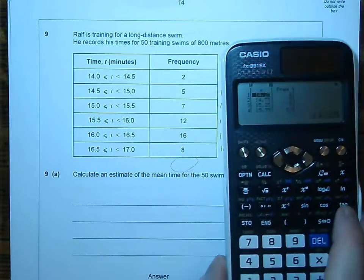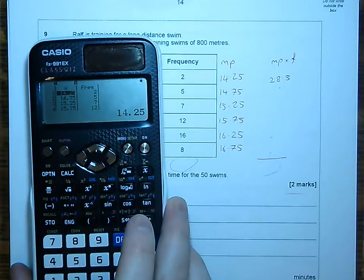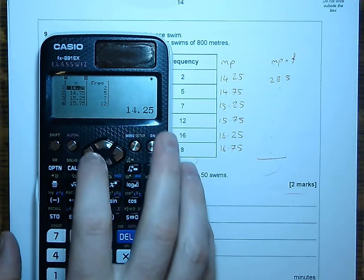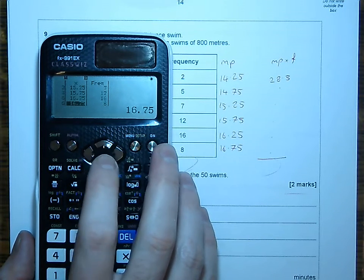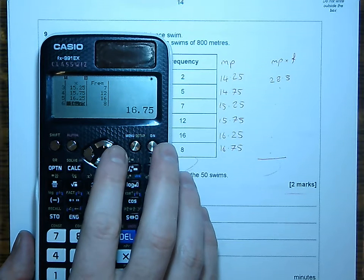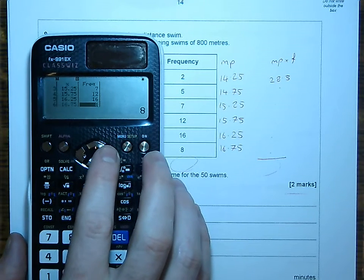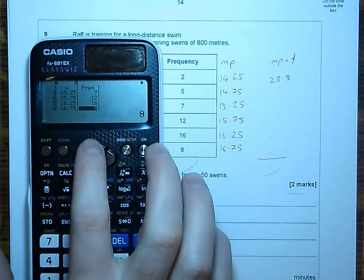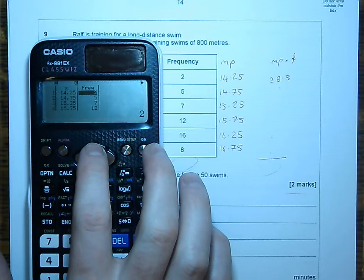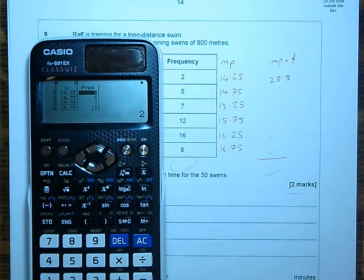As you can see, I have entered the midpoints, 14.25, 14.75, all the way down to 16.75, along with the corresponding frequencies. 8, there. 16, 12, 7, 5, 2. And if you scroll up, you can see I've got those there.